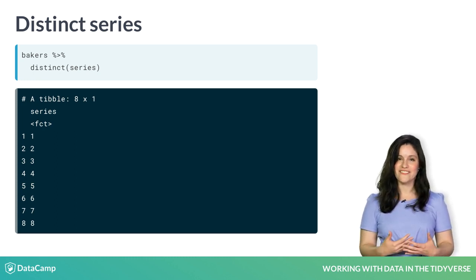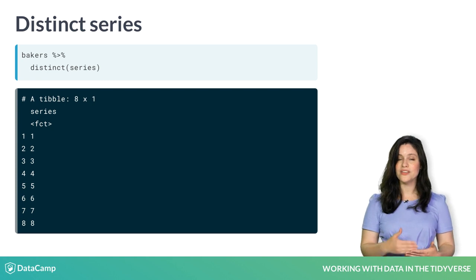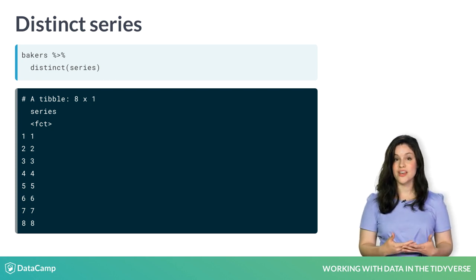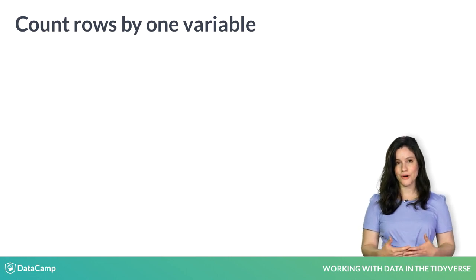So, we have eight series, and we know that each row is a baker. How can we count the number of distinct bakers per series? We'll use a new dplyr verb, count.